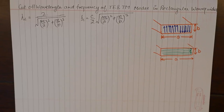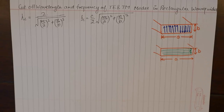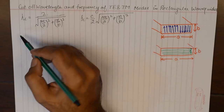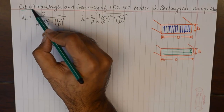Hello internet, welcome to another waveguides tutorial. In this tutorial we are going to discuss the most important parameter in rectangular waveguides propagation, that is cutoff wavelength and cutoff frequency. When we talk about cutoff wavelength, it is the maximum wavelength that is supported by a waveguide of certain dimension while propagating a certain mode.